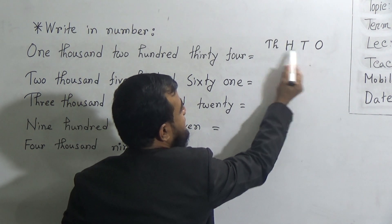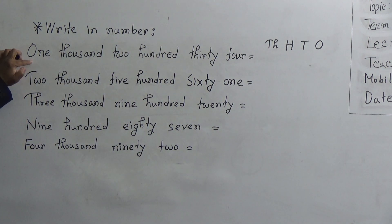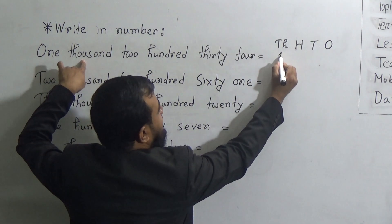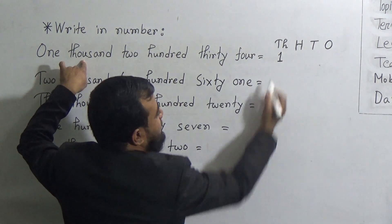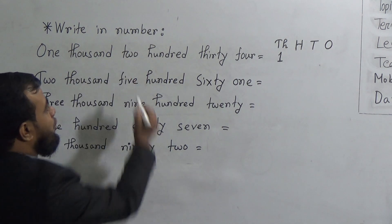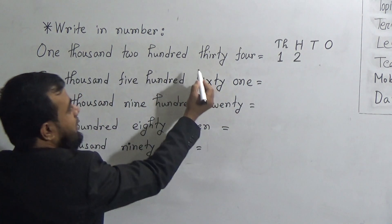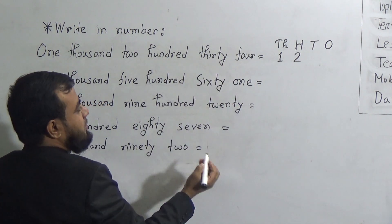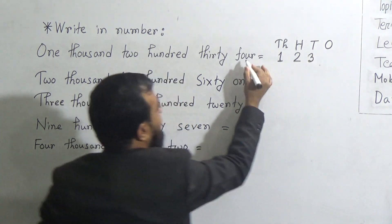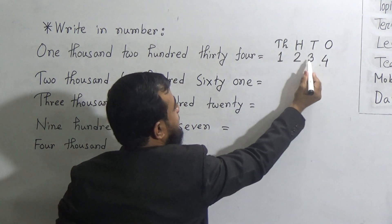1s means ones, 10s means tens, H means hundreds, TH means thousands. Now look — the first number is 1,000, which goes in the thousands place, so we fill that place with 1. Then 200 means we fill the hundreds place with 2. Then 30 means 3 goes in the tens place. And 4 goes in the ones place. This gives us 1,234.